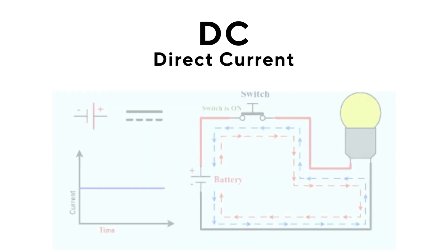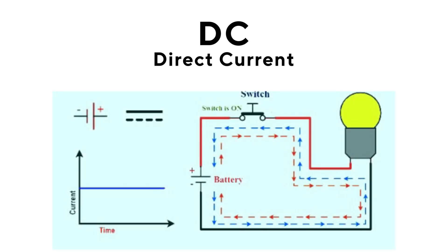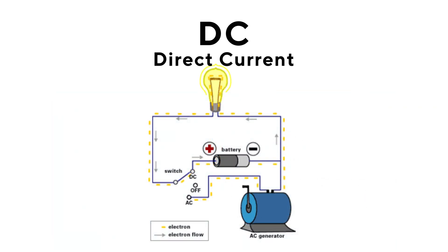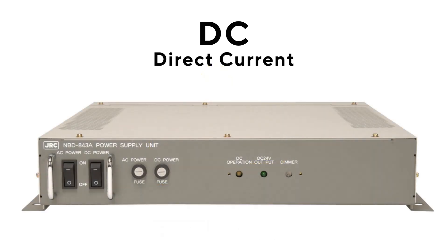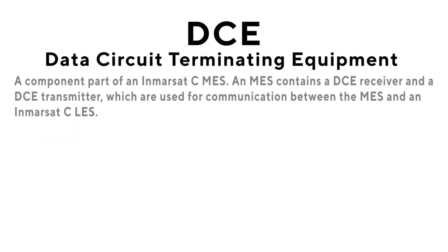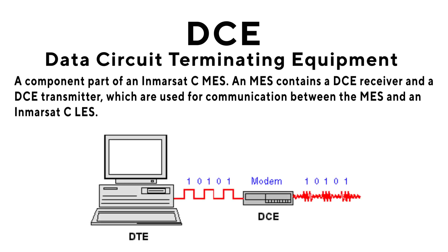DCE: Direct Current Equipment. DCE also stands for Data Circuit Terminating Equipment — a component part of an Inmarsat-C MES. An MES contains a DCE receiver and a DCE transmitter, which are used for communication between the MES and an Inmarsat-C LES.